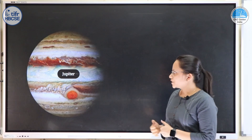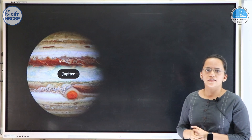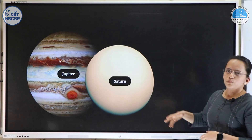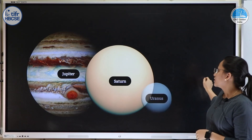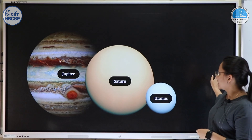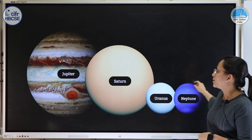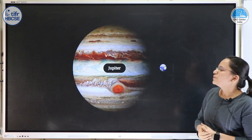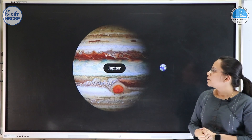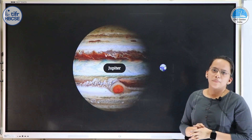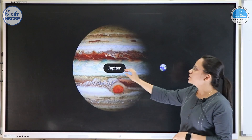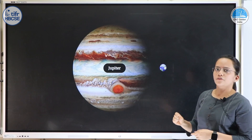Now we move on to Jupiter and the gaseous planets in our solar system. Considering Jupiter to be the largest object in the frame, Saturn is almost the same size as Jupiter, then Uranus is about half the size, and Neptune is also about half the size of Jupiter. Comparing to Earth, the diameter of Jupiter is about 11 times that of Earth's diameter.